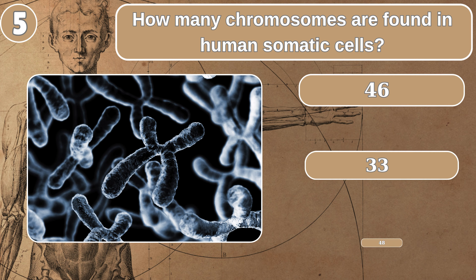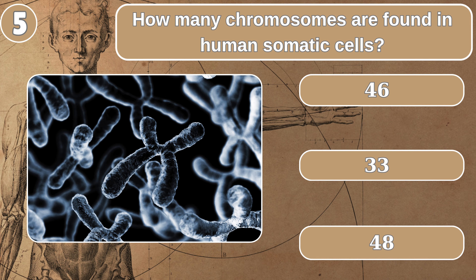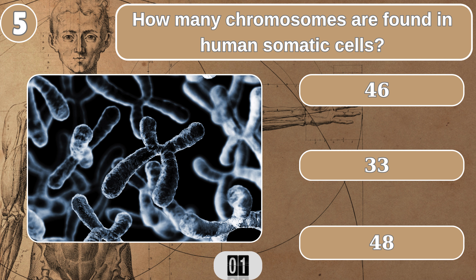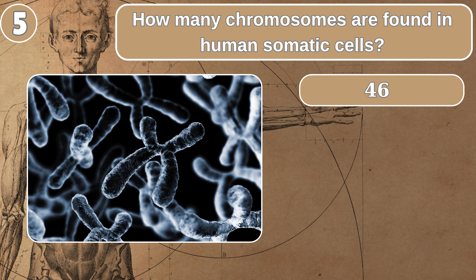How many chromosomes are found in human somatic cells? 46.